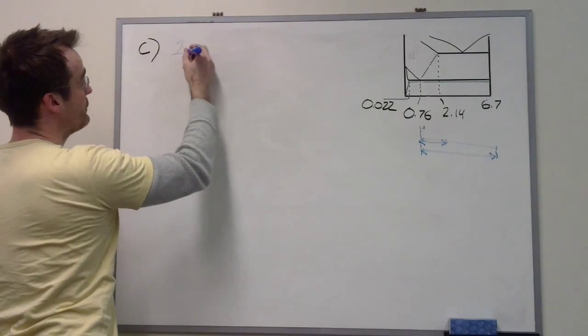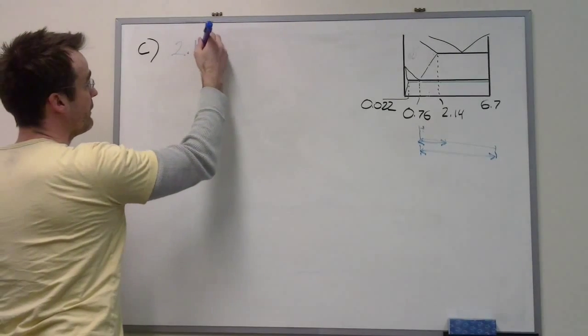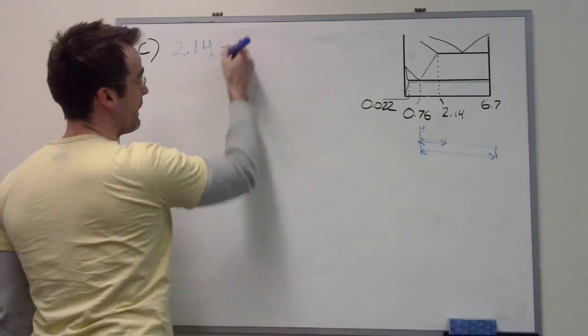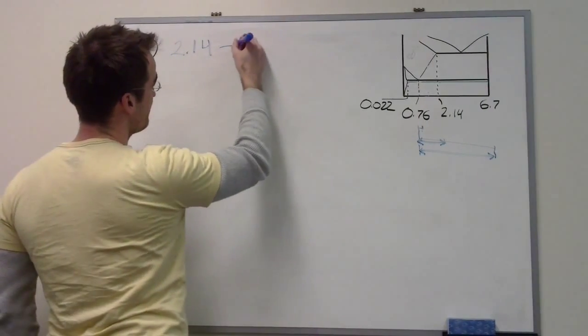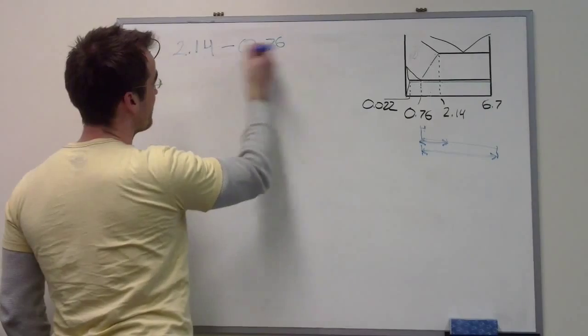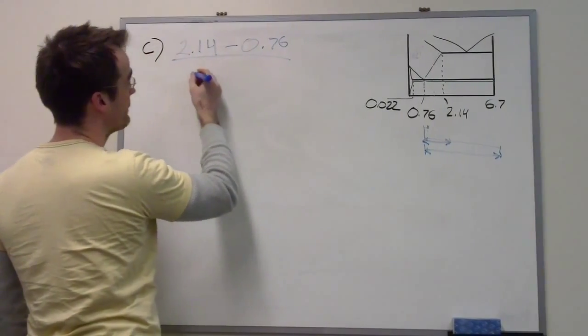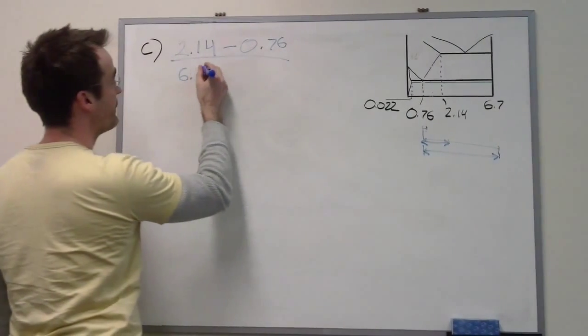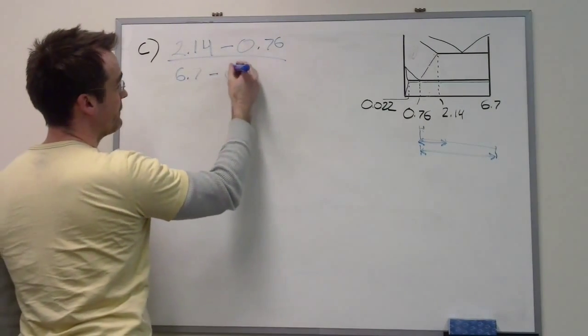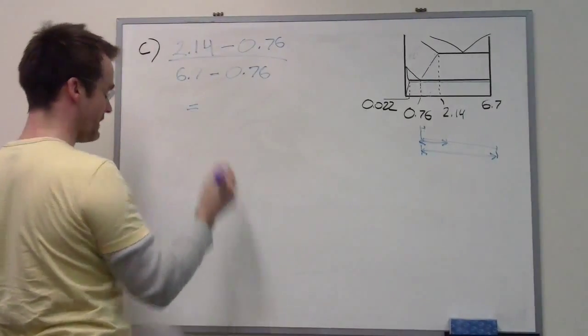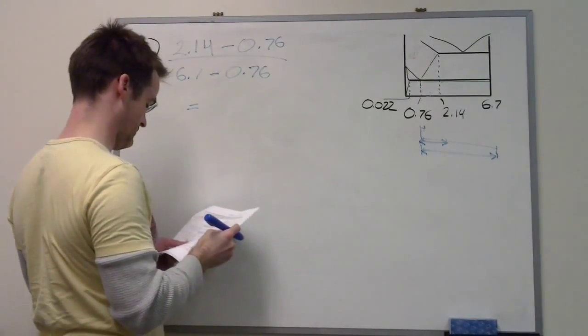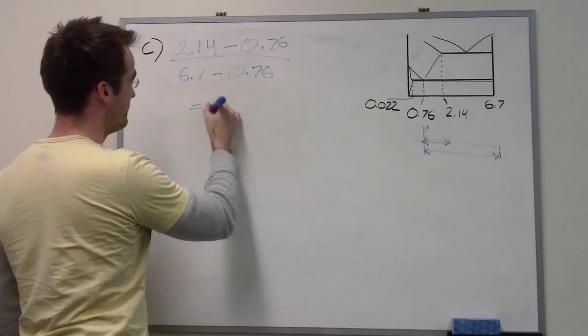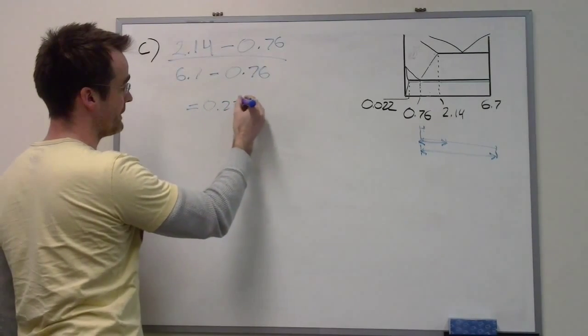It's going to be 2.14 minus 0.76 divided by the full length of the lever, which is 6.7 minus 0.76, which equals 0.232.